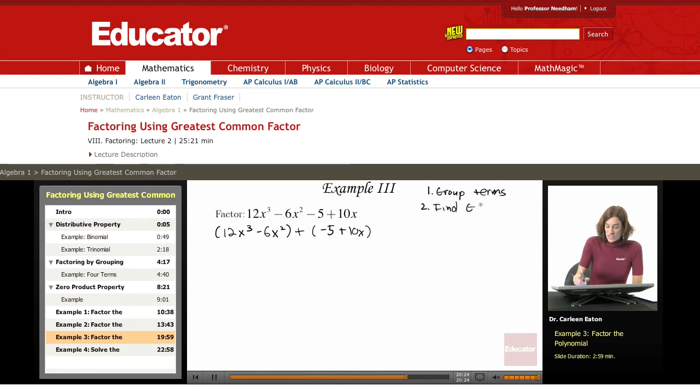Next, find the GCF for each group. Okay, let's look at this first group. Let's do it over here. 12x cubed minus 6x squared. The greatest common factor for the numbers is 6, and I notice that I have an x squared and an x cubed, so the greatest common factor there is going to be x squared.